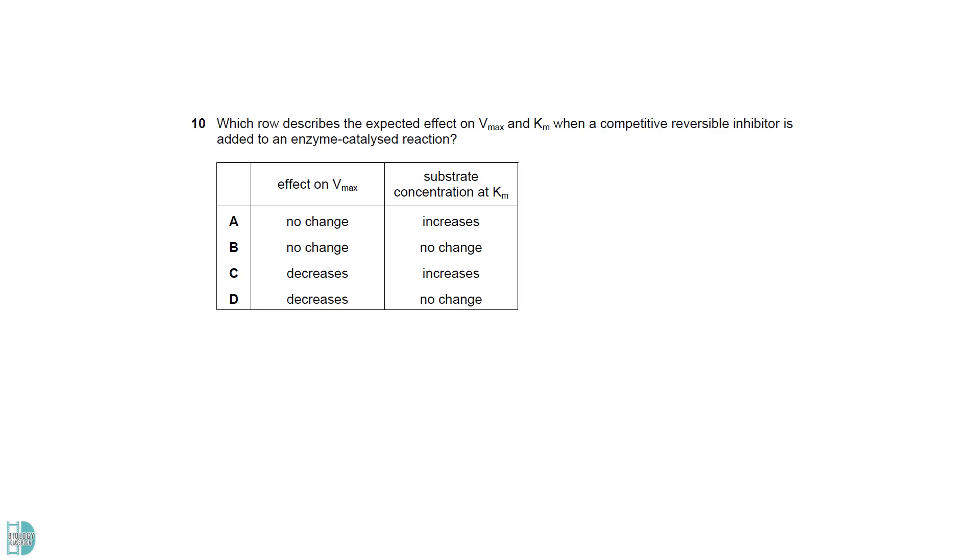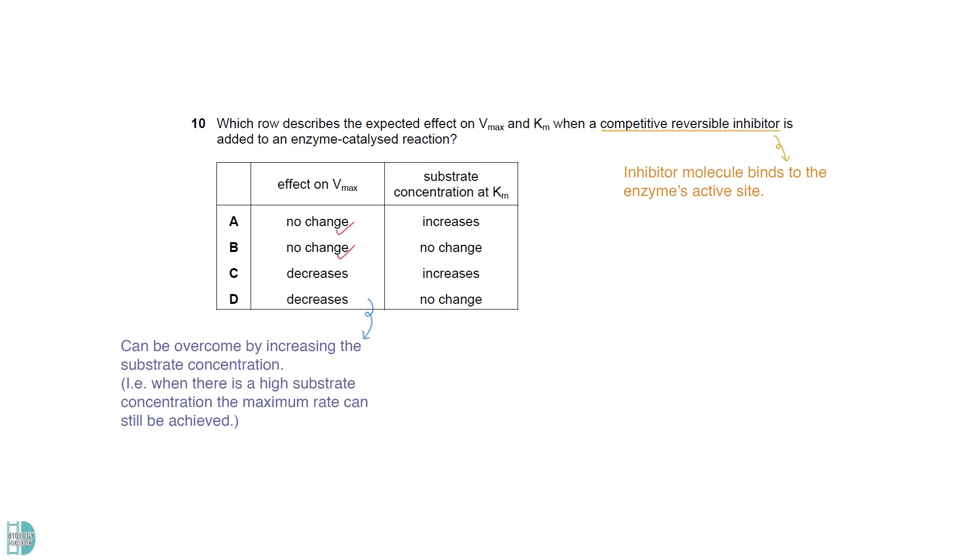In competitive reversible inhibition, the inhibitor molecule binds to the enzyme's active site. It can be overcome by increasing the substrate concentration, which means the maximum reaction rate, Vmax, remains unchanged. Km is the substrate concentration needed to reach half of Vmax. With the inhibitor present, more substrate is required to outcompete the inhibitor, resulting in an increase in Km.